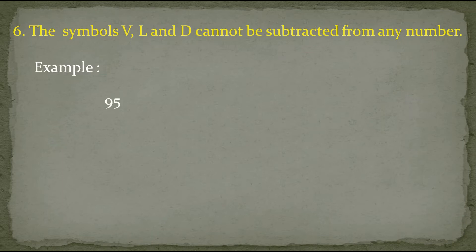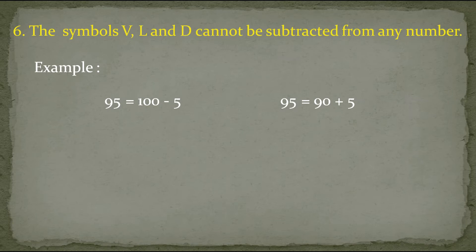If we have to write 95, one possibility might seem to be 100 minus 5 — that is C minus V. Since 100 is C and 5 is V, and we are subtracting, we would write VC. But as per this rule, this method is wrong because V cannot be subtracted.